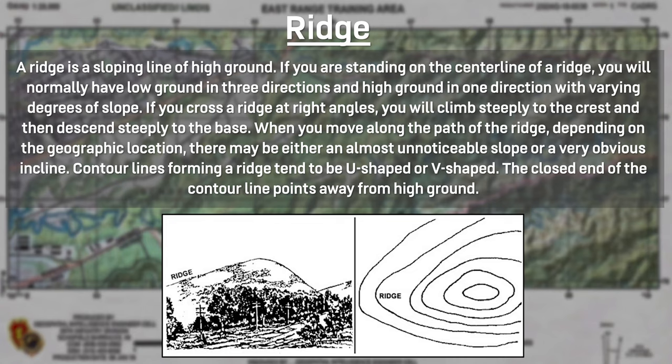A ridge is a sloping line of high ground. The centerline of a ridge normally has low ground in three directions and high ground in one direction with varying degrees of slope. If a ridge is crossed at right angles, a soldier climbs steeply to the crest then descends steeply to the base. Contour lines forming a ridge tend to be U-shaped or V-shaped, and the closed end of the contour line points away from high ground.